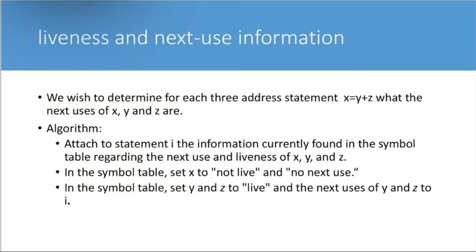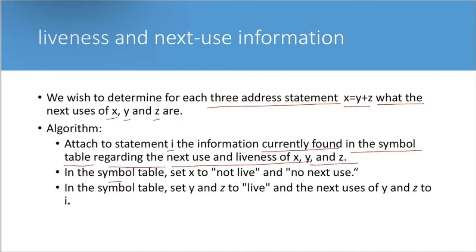Rules for finding a leader: the first three-address instruction in the intermediate code is a leader. Any instruction that is the target of a conditional or unconditional jump is a leader. Liveness and next use information: for each three-address statement, determine the next uses of x, y, and z. Attach to statement i the information found in the symbol table regarding next use and liveness. Set x to not live and no next use; set y and z to live with next use at i.